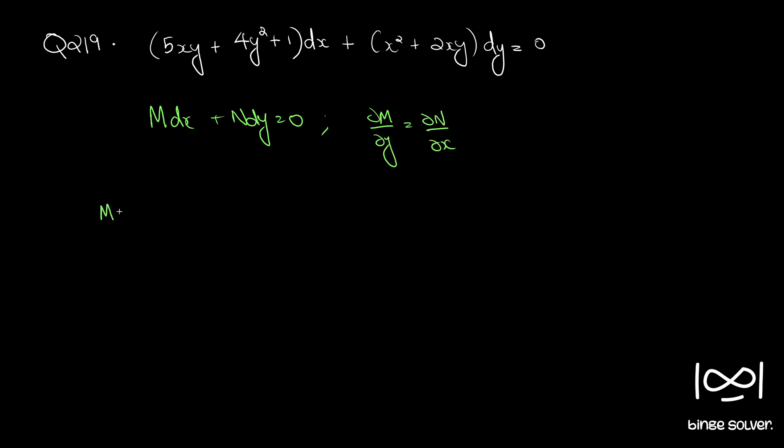So M here is 5xy plus 4y squared plus 1 and N is x squared plus 2xy. So dou M by dou y is 5x plus 8y and dou N by dou x is 2x plus 2y.